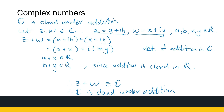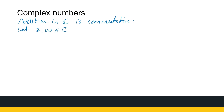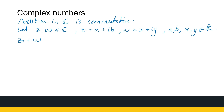For addition, let's look at commutativity. We're going to prove that addition in C is commutative. We need two elements of C: let Z and W be elements of C, where Z equals A plus iB and W equals X plus iY, with A, B, X, and Y all real numbers. I want to look at Z plus W and show that Z plus W equals W plus Z, because then I've shown addition is commutative.